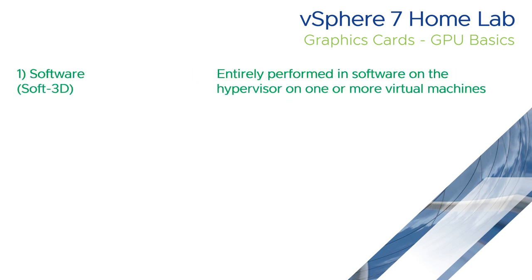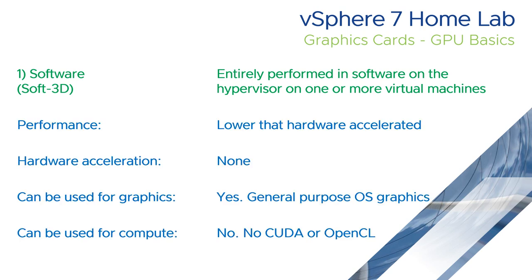So the first one is Soft3D. This is the one that's entirely performed in software — just a virtual graphics card done in software. Performance is a lot lower than hardware-accelerated because it's emulated in software with no hardware acceleration whatsoever. It can be used for general-purpose operating system graphics, but not for things like CAD, CAM, or heavy imaging programs. And it can't be used for compute — things like CUDA and OpenCL don't exist on a software VGA card.